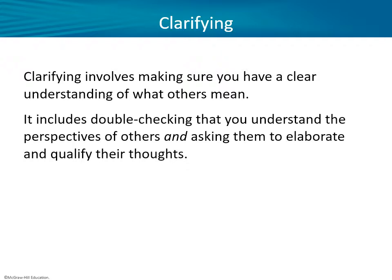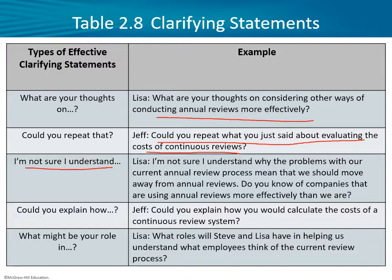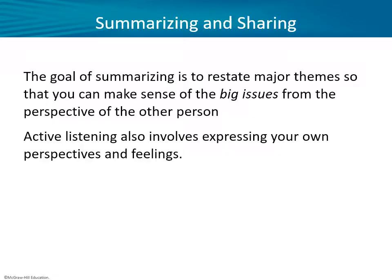Clarifying involves making sure you have a clear understanding — it's a double-checking mechanism. Examples include: 'What are your thoughts on considering other ways of conducting annual reviews more effectively?' Or: 'Could you repeat what you just said about evaluating the costs of continuous reviews?' Or admitting: 'I'm not sure I understand why the problems with our current annual review process mean we should move away from annual reviews.' These are all ways of clarifying, much more productive than just being disagreeable. Summarizing involves restating the major themes to make sense of the big issues from the other person's perspective.